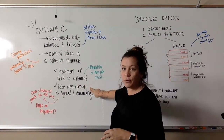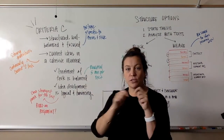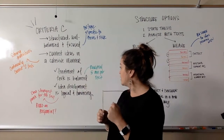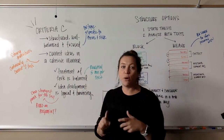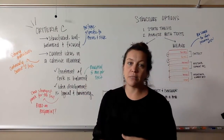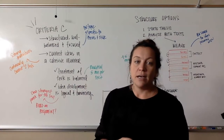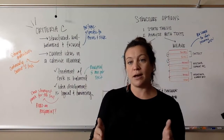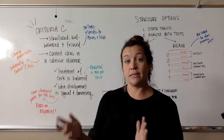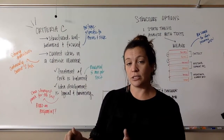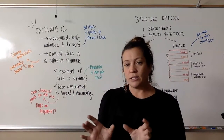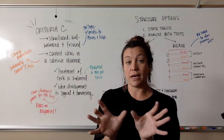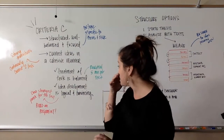In the actual rubric itself, under the evaluation tabs, there are more items to consider. Number one, the treatment of both texts needs to be balanced. In my practice IA, I spent way more time on the Murakami text than I did on Billie Eilish's 'Lovely,' so I need to figure that space and timing out to treat them both equally.